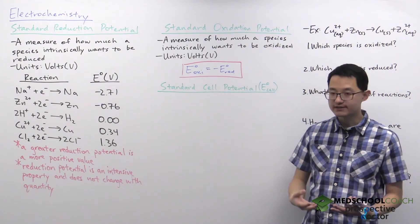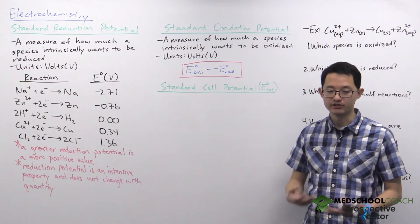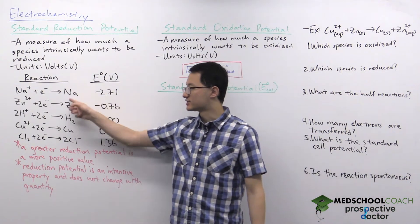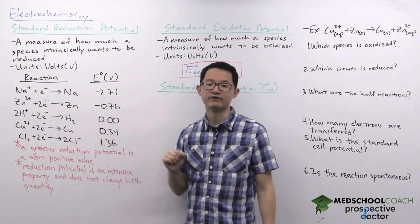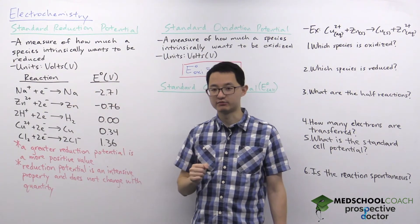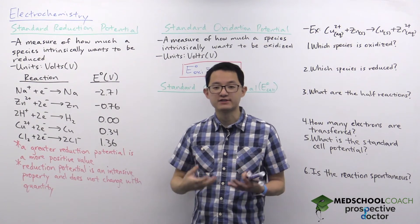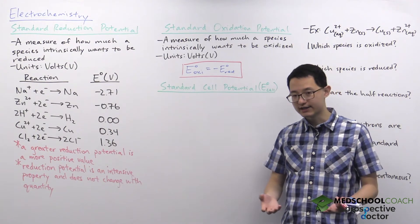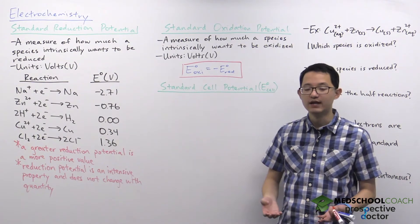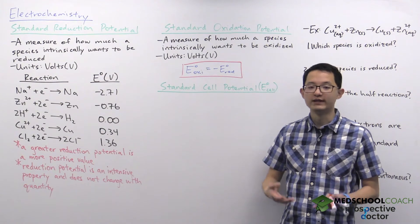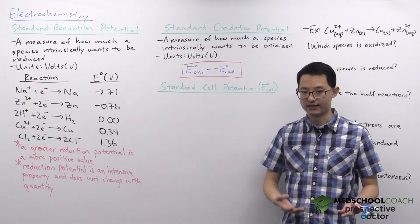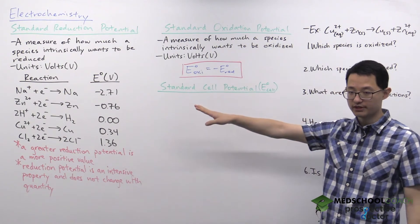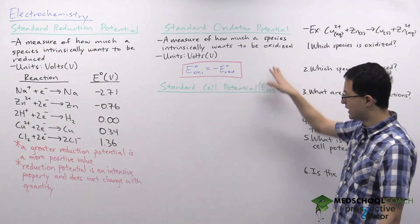If you flip the reaction, the sodium atom has a standard oxidation potential of positive 2.71 volts. The more positive the standard oxidation potential, the more the species wants to be oxidized. Sodium's positive 2.71 volt oxidation potential is a very positive value indicating that sodium really wants to be oxidized — which makes sense because sodium is an alkali metal, and if it loses one electron it attains a noble gas configuration.